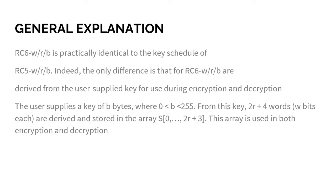Alright, thank you Muhammad Sirash for the explanation. Next, I will explain about the general explanation of RC6 algorithm. So basically, RC6 is practically identical to the key schedule of RC5. Indeed, the only difference is that for RC6 are derived from the user-supplied key for use during encryption and decryption. The user supplies a key of b bytes where b is more than zero and less than 255. From this key, 2r plus 4 words of w bits each are derived and stored in the array S0 till 2r plus 3. This array is used in both encryption and decryption.